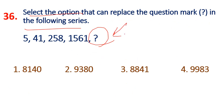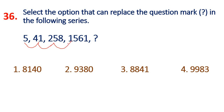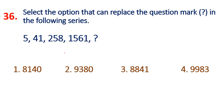Next, question 36: Find the question mark in the series - 5, 41, 258, 1561, question mark. The multiplication pattern: check how many times each number multiplies. 250 to 1500 is 6 times. So the multiplier is 6.